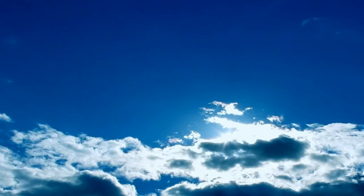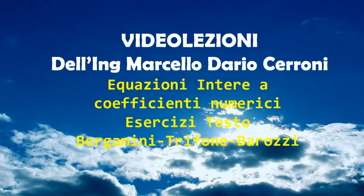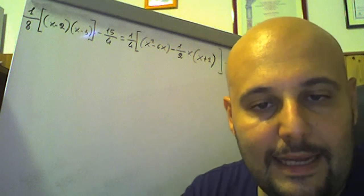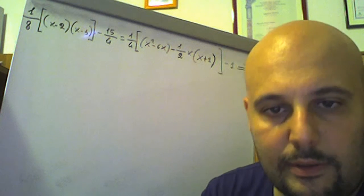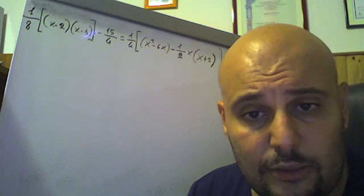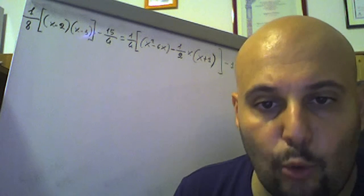Un saluto cordiale a tutti coloro che sono in ascolto. Iniziamo con una serie, una bella carrellata di esercizi di riepilogo riguardanti l'argomento equazioni lineari intere a coefficienti numerici interi e frazionali. Trarrò una ventina di esercizi dal testo intitolato Algebra Blu 1 della casa editrice Zanichelli degli autori Bergamini, Trifone, Barozzi, libro utilizzatissimo nelle scuole.